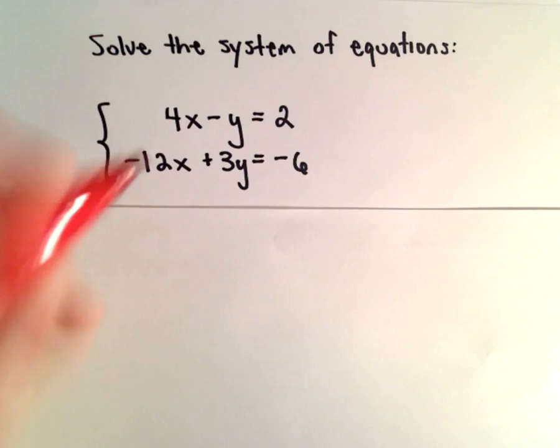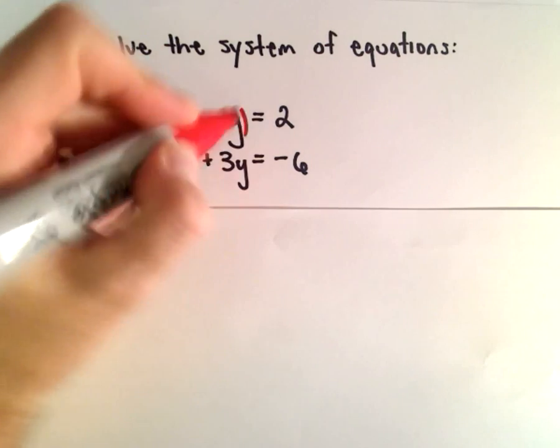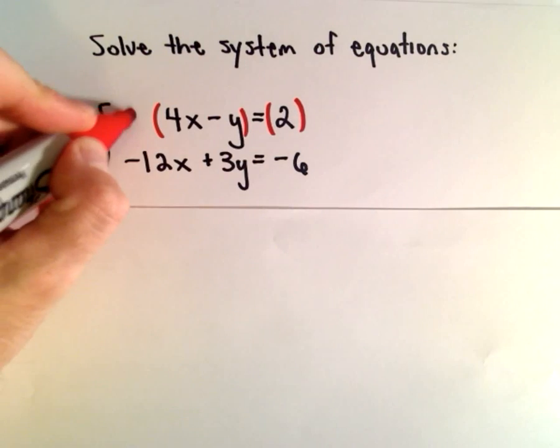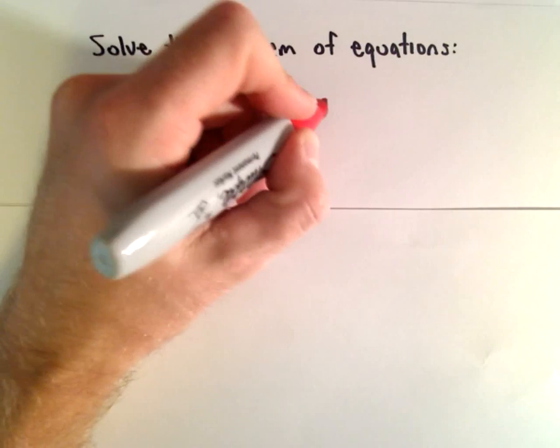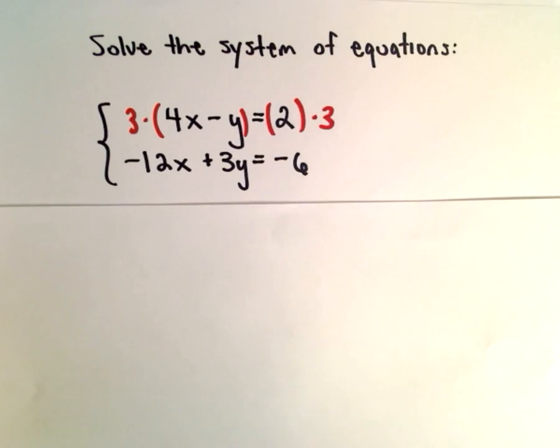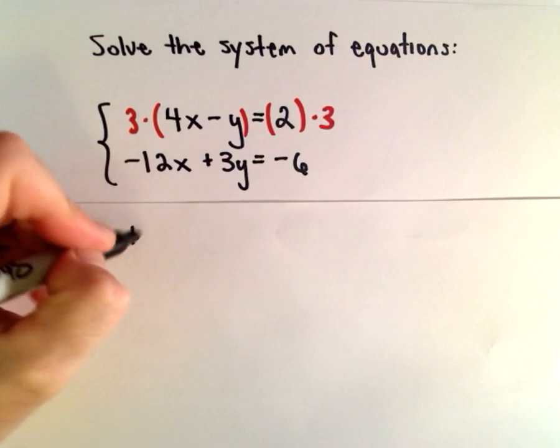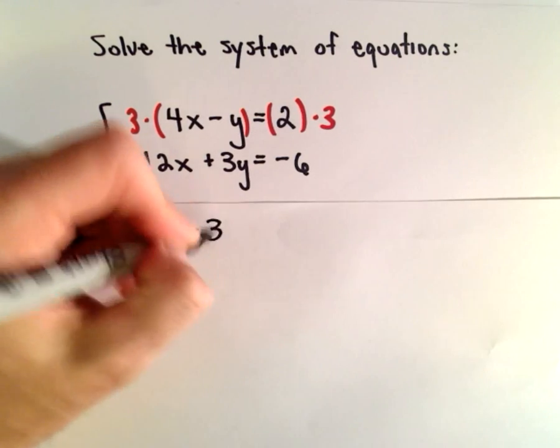So to make a 12x appear, what I can do to my first equation is I can simply multiply both sides by 3. Well if I do that I'll get 12x minus 3y equals 6.